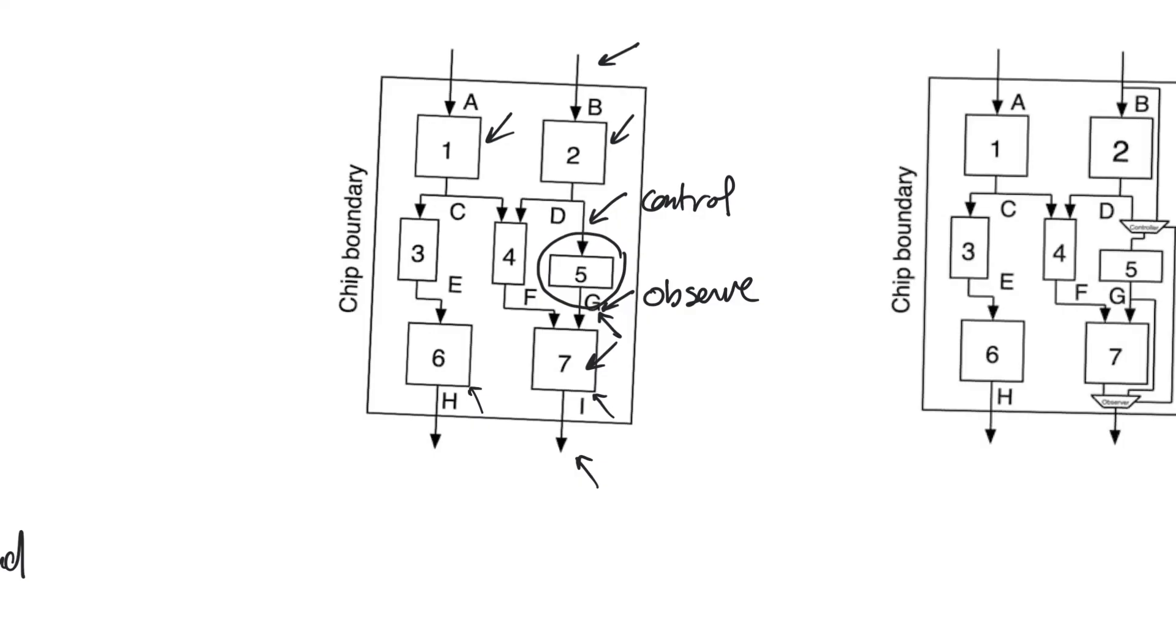The only way you can reach these internal nodes is to bring them out to output pins. So you need to bring this out to an input pin and you need to bring this out to an output pin, which you can do, but there's a couple of problems here. The first problem is with pin count - you usually have a very limited number of pins. The other problem is also that you don't actually want this node, node D, to be controlled from the external input. In most normal operation, you want it to come as the output of module 2.